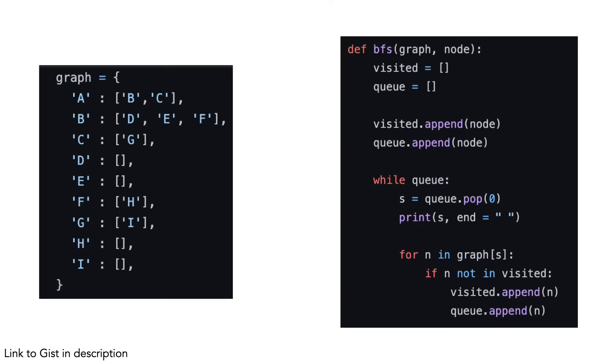Here is the code for breadth-first search. There is a link to a working Python example in the description. On the left is our graph, represented as an adjacency list. Let's walk through the code on the right.